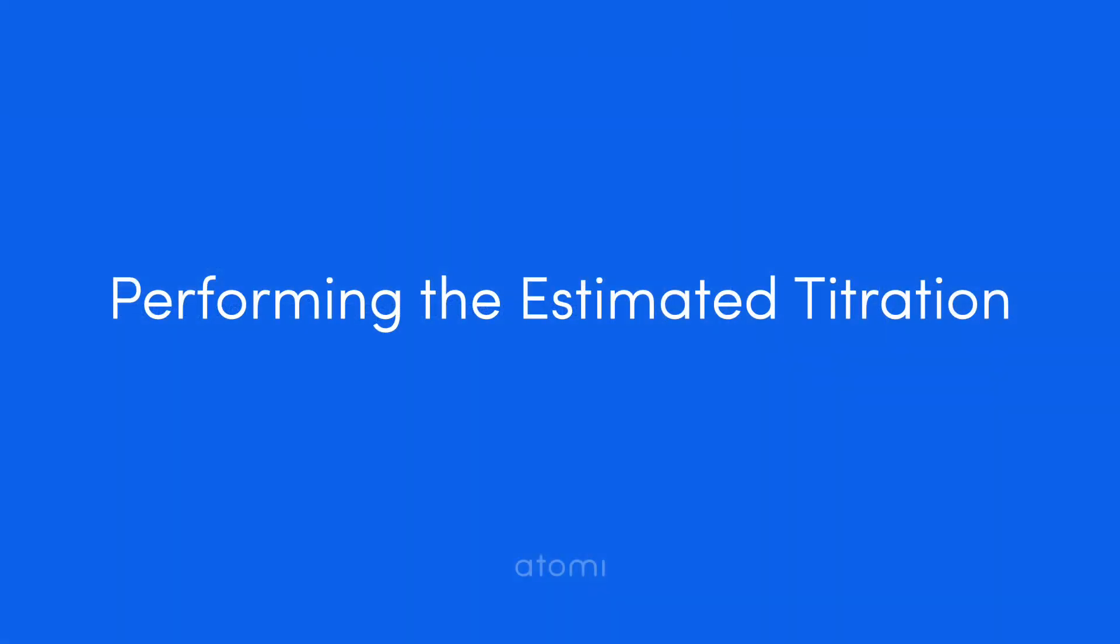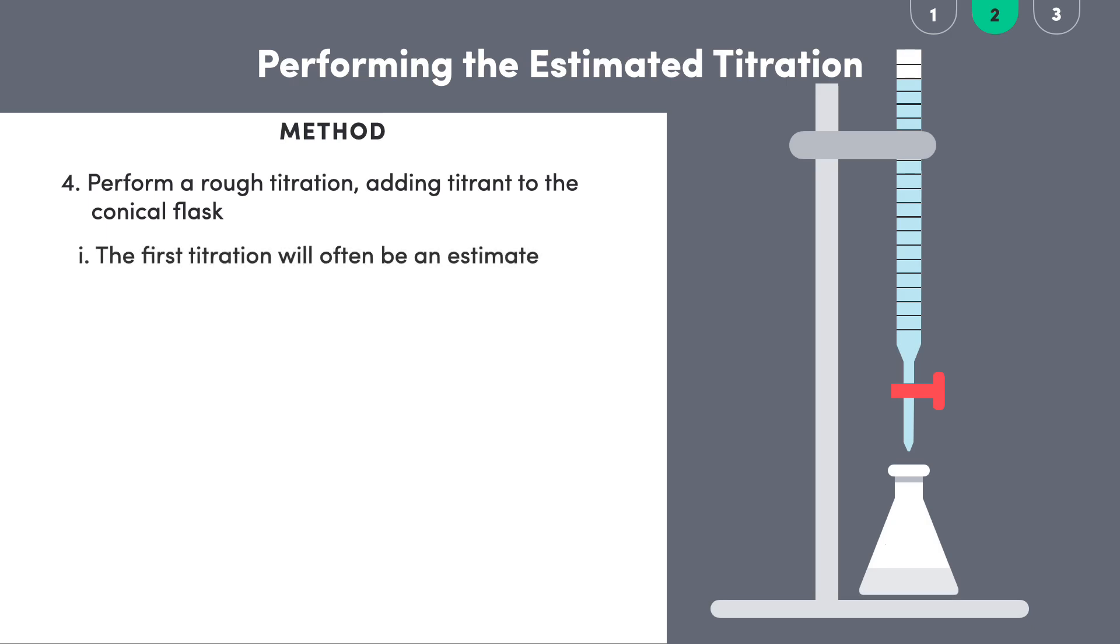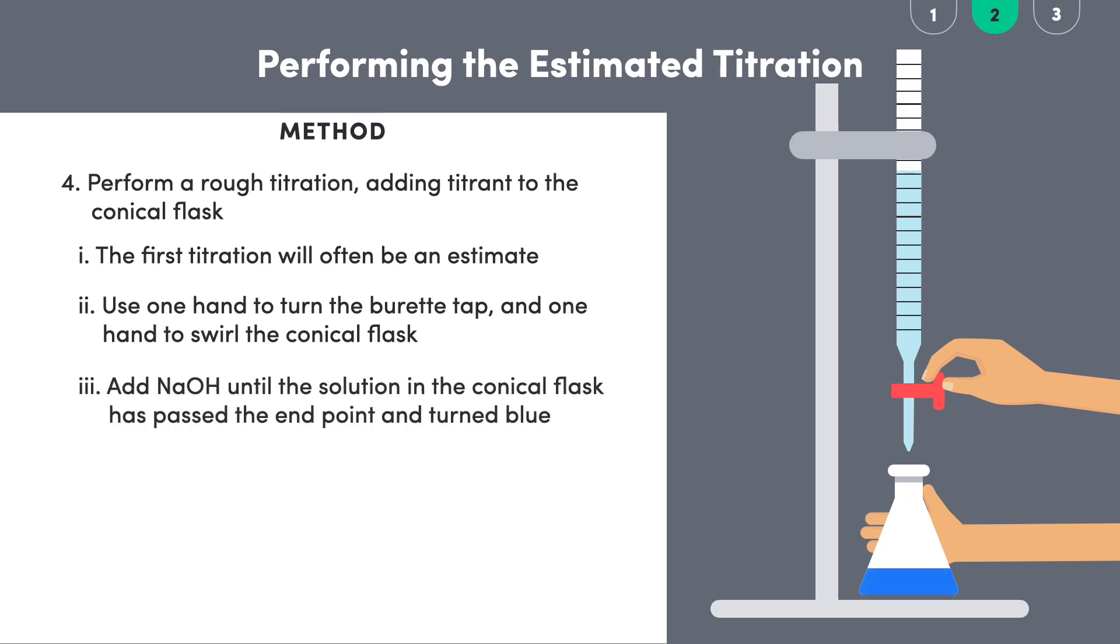Finally, we're on to our actual titration, delivering our titrant to the conical flask containing the analyte. It is common lab practice for the first titration to be an estimate, so it's also a bit of a practice run. Operating a burette requires two hands and can be a bit of a finicky process if we're not used to it. One hand turns the burette tap to release standard solution into the conical flask, whilst the other swirls the conical flask, making sure that the solutions are mixing together. As the sodium hydroxide enters the flask, flashes of blue appear in the overall slightly yellow solution as we swirl. Keep adding the sodium hydroxide until the solution inside the conical flask turns completely blue, indicating that we've passed the endpoint.